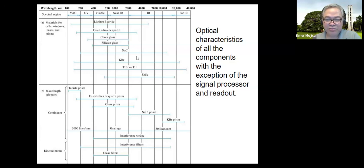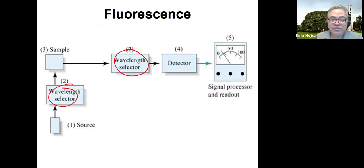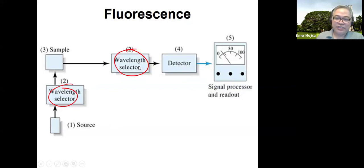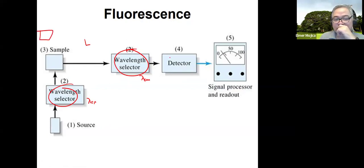The only thing that makes them different is the arrangement they have. In absorption you have components one through five. In fluorescence, look at the difference — you still have the source, then a wavelength selector, then the sample. The wavelength selector for the excitation wavelength, and then the emission wavelength. The configuration is either an L-shape — sometimes you can put another wavelength collector and detector on the other side for a T-shape.